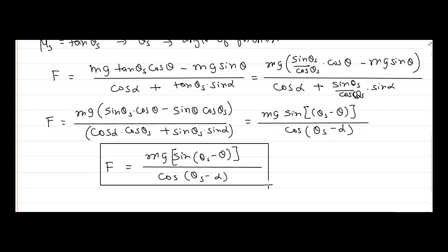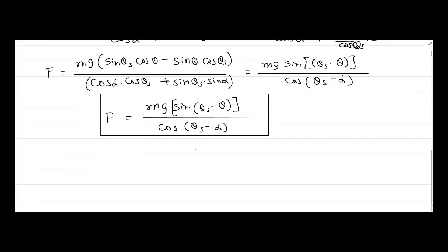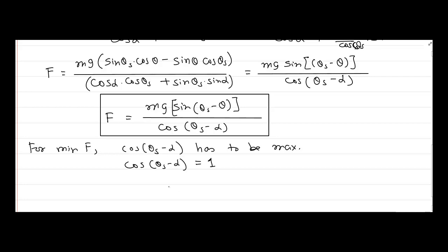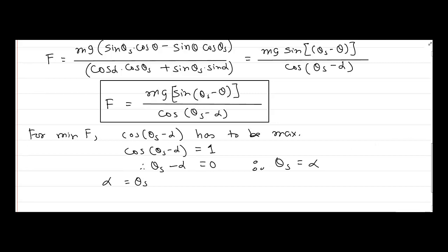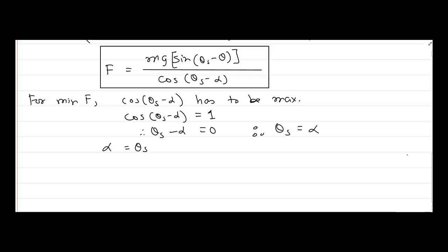So we arrive at the equation for force F required to push the object down the inclined plane: F = Mg sin(θs − θ) / cos(θs − alpha). For minimum F, the denominator cos(θs − alpha) must be maximum. The maximum value of cosine is 1, which occurs when θs − alpha = 0, meaning alpha = θs. So when the applied force angle alpha equals the angle of friction θs, the minimum force is required to push the object down.